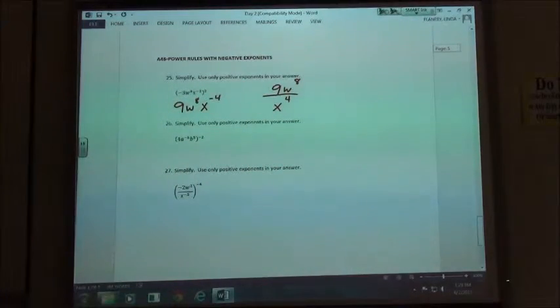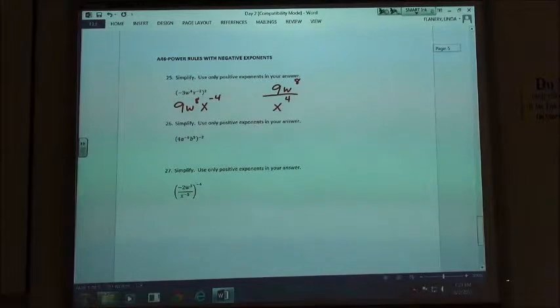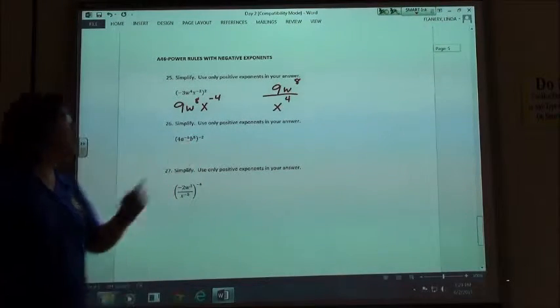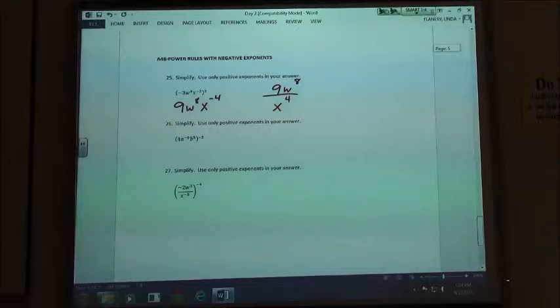Now, the next two have negative exponents on the outside. When you have that negative exponent with the coefficient, it's a little bit trickier. But do you want to get rid of the negative exponent first or do we just want to raise it to the negative 2 power?